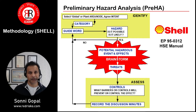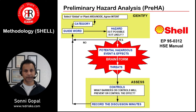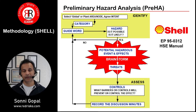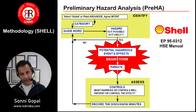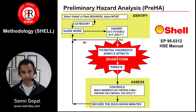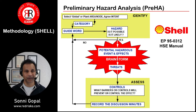Let's dive into a methodology from Shell. This is Shell DEP EP950312 from the HSE manual. Essentially it's the same — it's all about brainstorming, getting together, looking at potential hazards, and then looking at controls that are in place. Is it applicable? Then repeat it and go forward — a looped type approach. Stop the video whenever you want to look at this diagram in more detail.